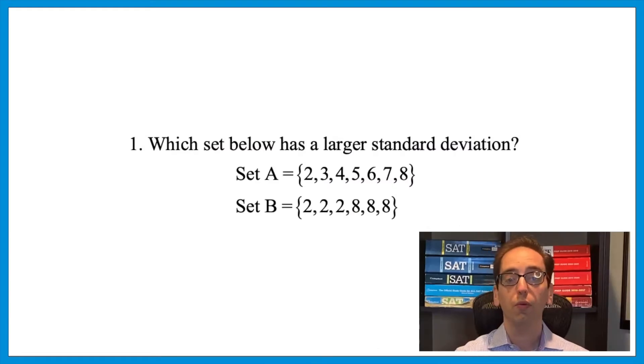Both tests might include questions dealing with standard deviation. For example, question one: which set below has a larger standard deviation? Set A: 2, 3, 4, 5, 6, 7, 8. Set B: 2, 2, 2, 8, 8, 8. So both of these sets have the same range. They both go from two to eight, but they're still different.